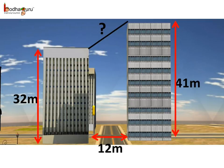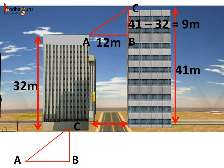How do we find this distance between the tops of the two buildings? We can use the Pythagoras theorem to solve this problem. We draw right-angled triangle ABC. The distance between the buildings is AB, which equals 12, and the difference in heights is BC, equal to 41 minus 32, which is 9 meters.